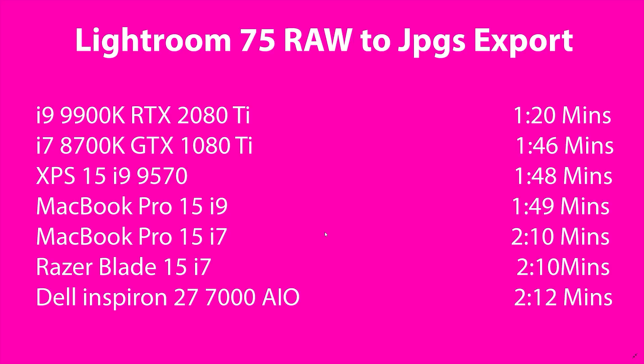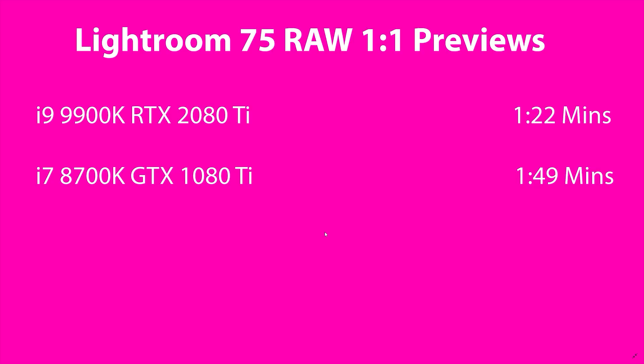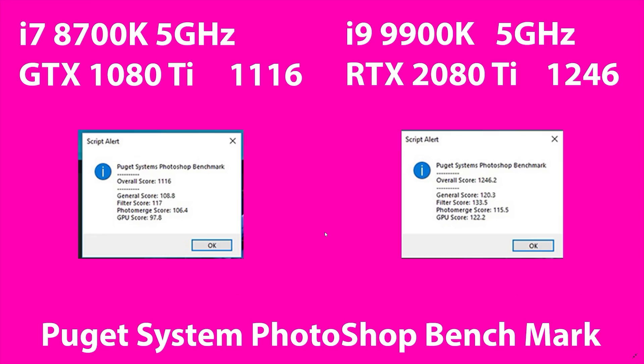This is very interesting — Lightroom exporting 75 RAWs to JPEGs. Look at those laptops; they are so competitive with the i7 8700K. But have a look at the i9 9900K: 1 minute 20 seconds versus 1 minute 46 seconds — that's a 17% difference. This continues across all the content creation tests. When it comes to content creation, the i9 combined with the 2080 Ti just kills it, with roughly an 18% difference — 1 minute 22 versus 1 minute 49.